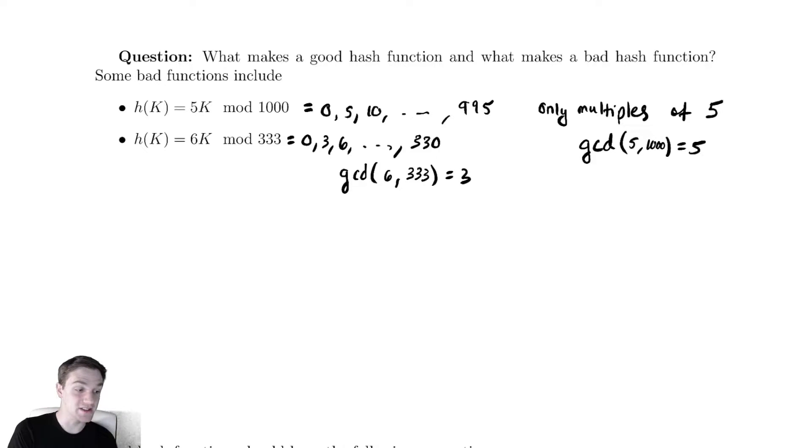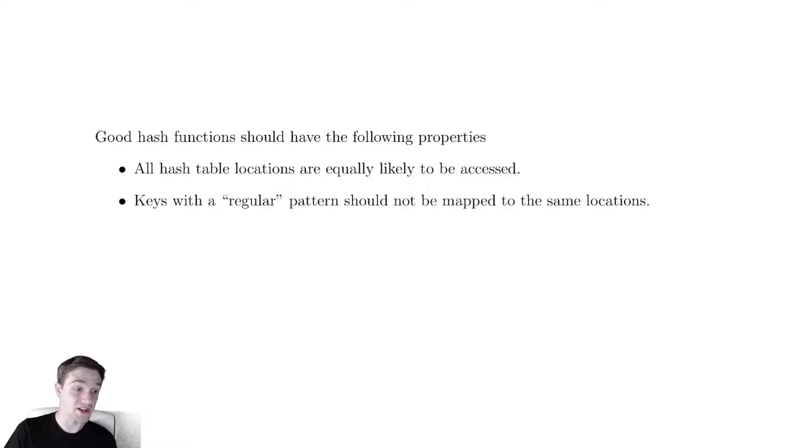So if these are bad choices, what are properties of good hash functions? The first one is that you want every location in the table to be equally likely to be accessed. This is that property the universal hashing function had. You want a 1 over m probability of accessing every single location. Depending on what you know about your keys, you may be able to do this in various ways.